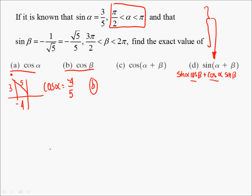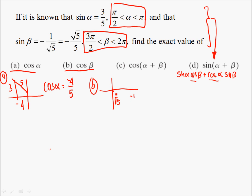Do the same thing for the cosine of beta. If you want to find out what the cosine of beta is, make sure you're in the right quadrant — between 3π/2 and 2π puts you in quadrant 4. And this one's negative 1 over the square root of 5, so the opposite is negative 1, the hypotenuse is √5. How do you find out what the adjacent side is? Using the Pythagorean theorem, that should give you 2.